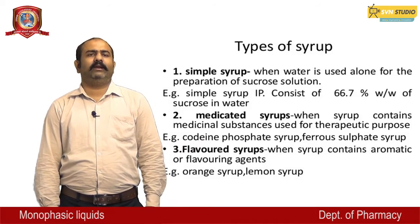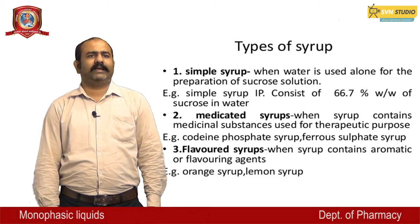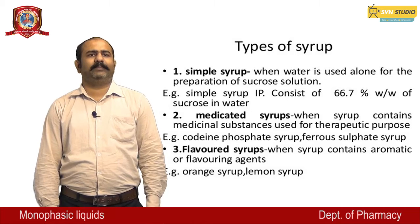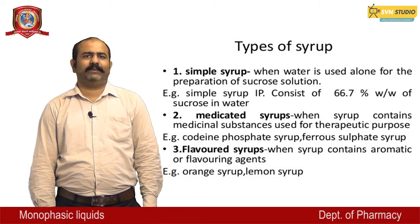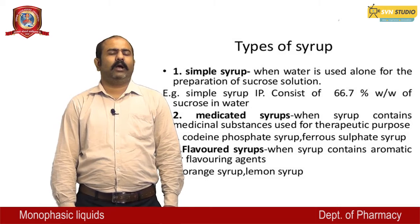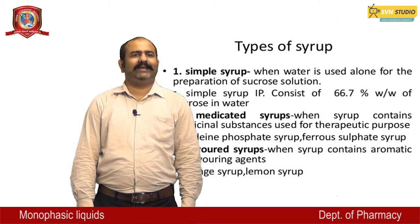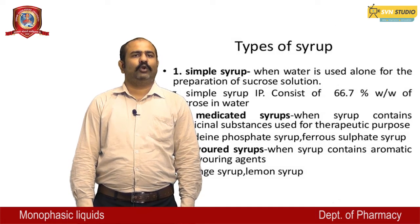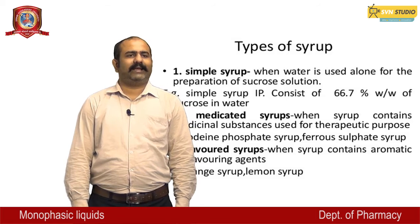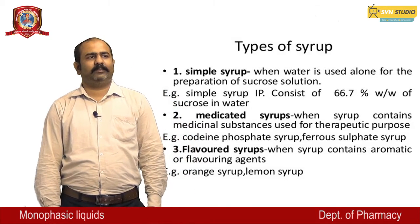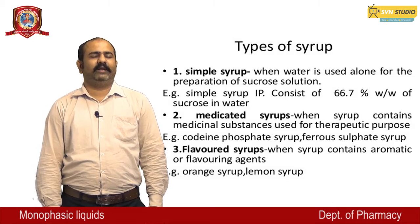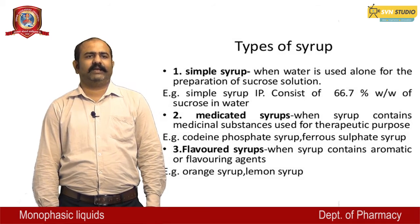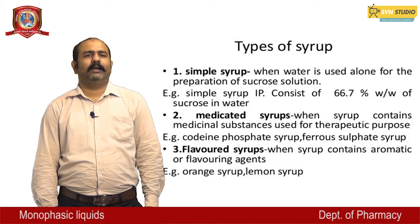Types of syrup: First, simple syrup — when water alone is used for preparation of a sucrose solution, example simple syrup IP consisting of 66.7% w/w sucrose in water. Second, medicated syrups — when syrup contains medicinal substances used for therapeutic purpose, example codeine phosphate syrup and ferrous sulfate syrup. Third, flavored syrups — when syrup contains aromatic or flavoring agents, example orange syrup and lemon syrup.